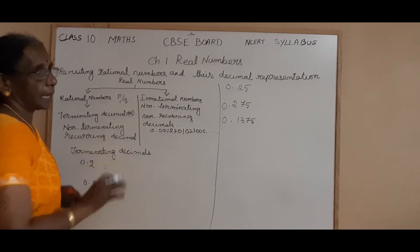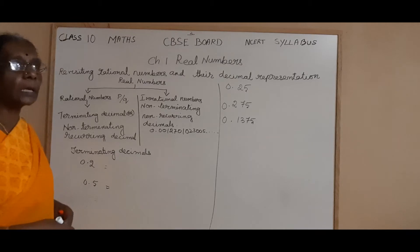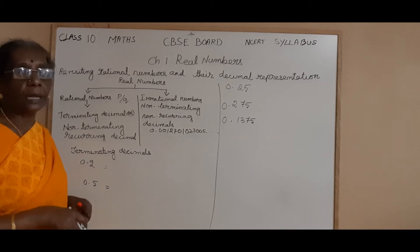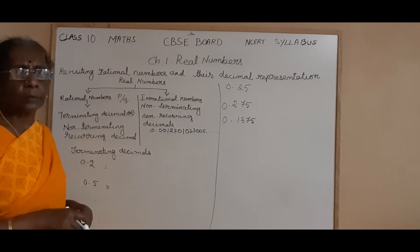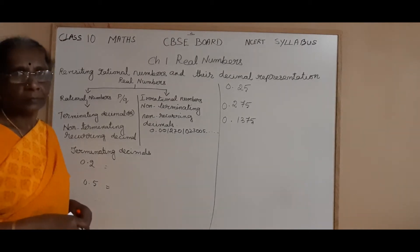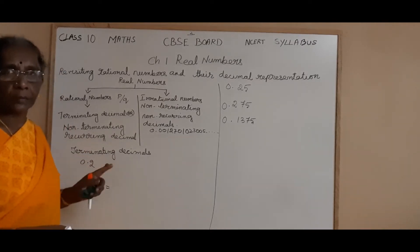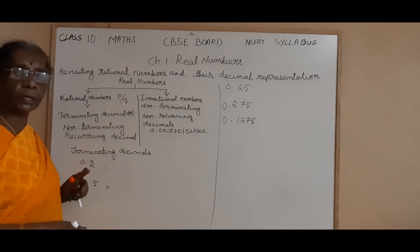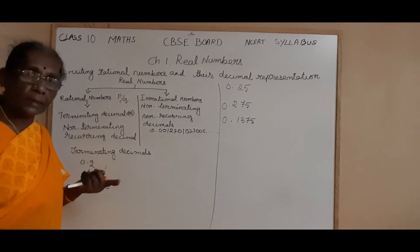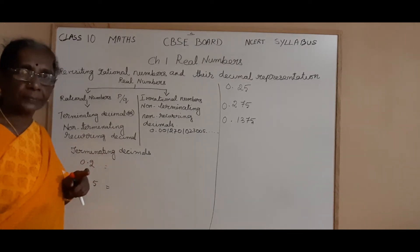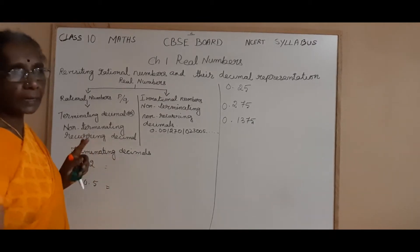Regarding terminating decimals: see 0.2 — what the name 'decimal' means — 'decim' means ten, okay. So if you have one decimal place, the denominator should be 10. If you have two decimal places, the denominator should be 10 into 10, that is 10 squared. If the decimal has three decimal places, the denominator should be 1000, that is 10 cubed.